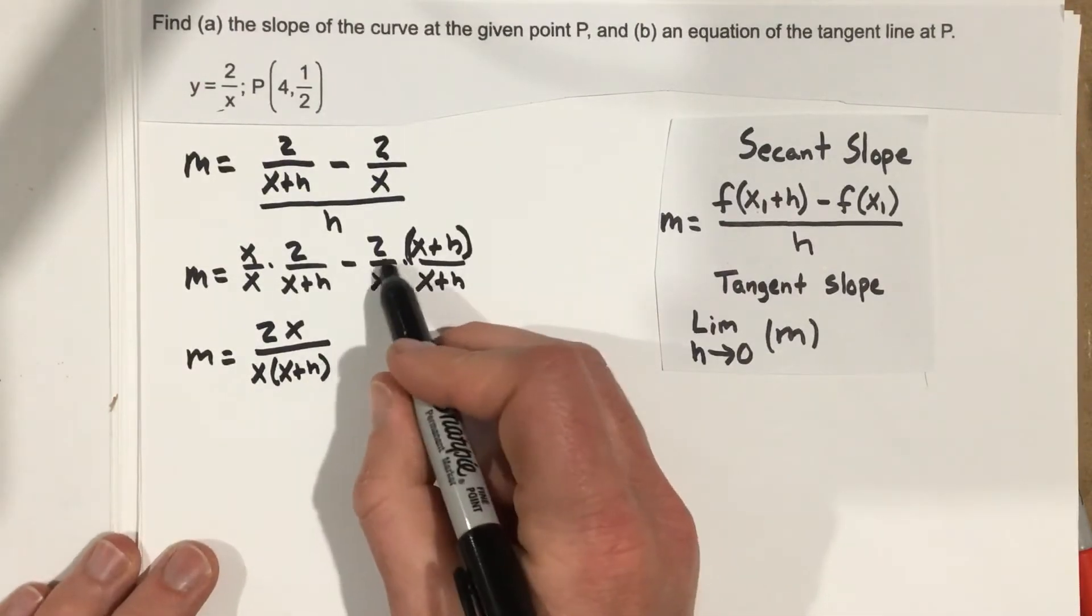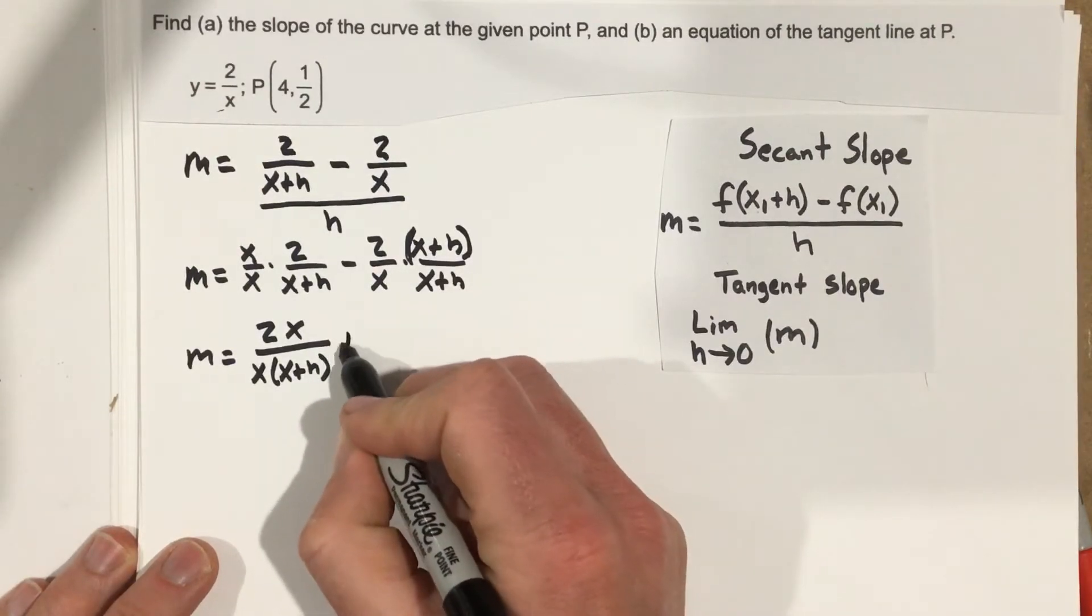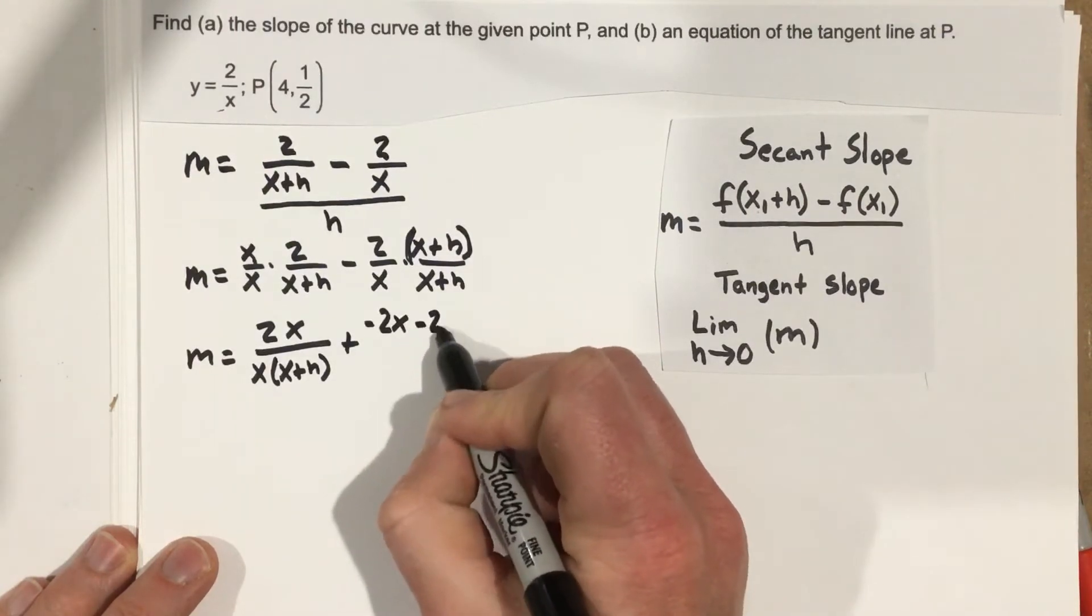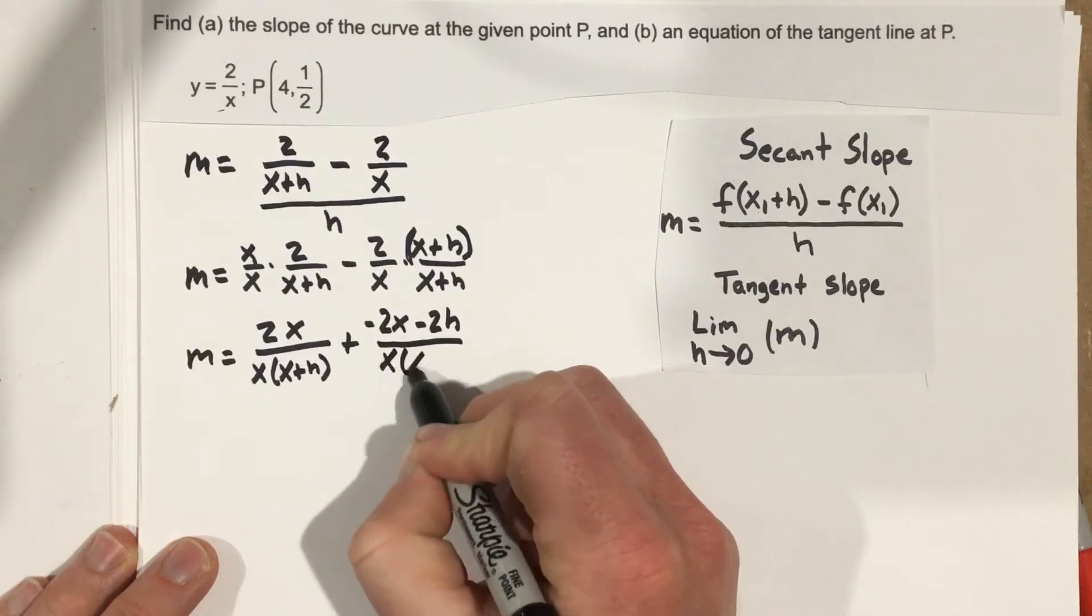When I distribute this, this is going to give me a plus negative 2x minus 2h all over x times x plus h.